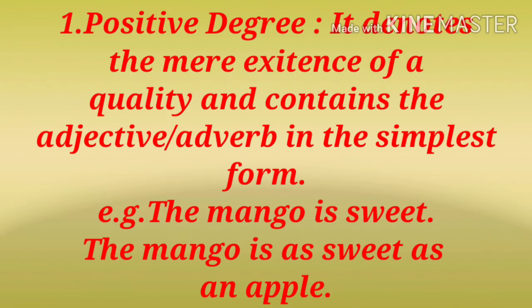Let's understand positive degree in detail. Positive degree denotes the mere existence of a quality and contains the adjective or adverb in the simplest form. For example, 'the mango is sweet' — here, 'sweet' is an adjective in simple form. Second example: 'the mango is as sweet as an apple' — here, 'sweet' is an adjective in its simplest form.